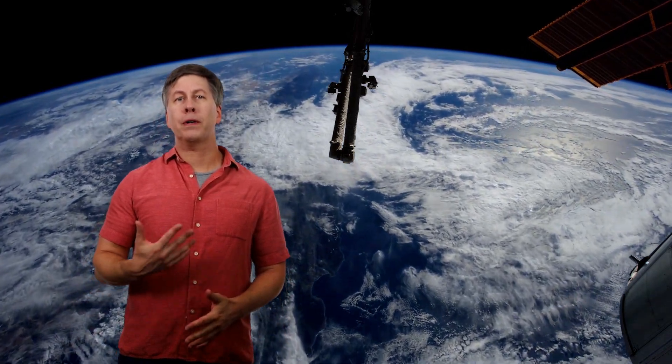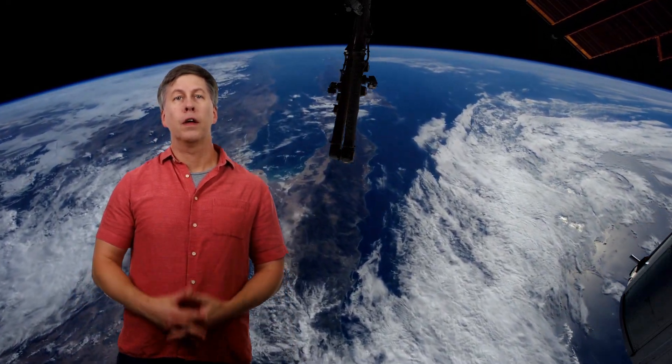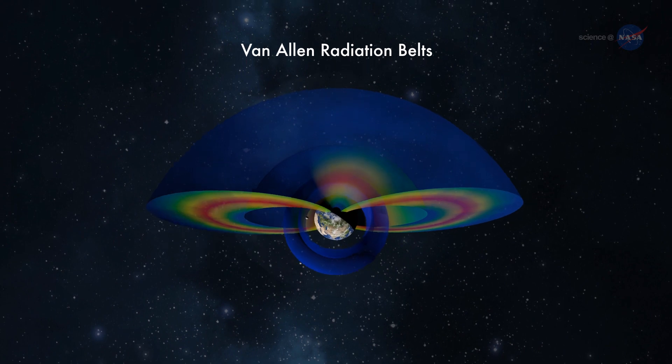As astronauts leave the ground, they are initially within a zone of protection, and most missions such as those to the International Space Station remain within that zone. But for missions to the Moon or beyond, when the astronauts reach about 400 miles or sometimes more above the surface, they reach the first of two Van Allen belts.